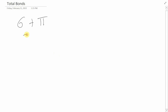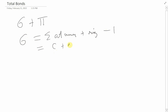One of them is designated as the sigma rule, which is basically the sum of the atoms plus the rings minus one. We can rewrite this as: the number of carbons, plus nitrogens, plus halogens, plus hydrogens, plus rings, minus one. That's the sigma rule — just add up all the atoms plus the rings minus one.